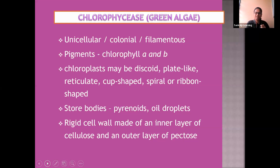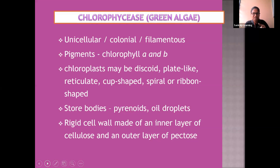Those organisms will be unicellular — that is, having a single cell — colonial, and filamentous. The chloroplast will be discoid in shape, disc-shaped, plate-like, reticulate (network-like), cup-shaped, spiral (in the form of a spring), or ribbon-shaped. They will store substances where pyrenoids are stored, and these pyrenoids will be seen in the chloroplast only.